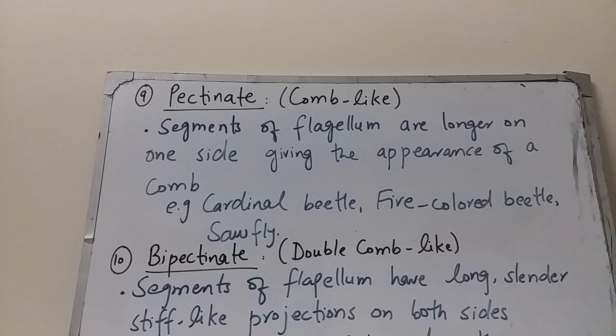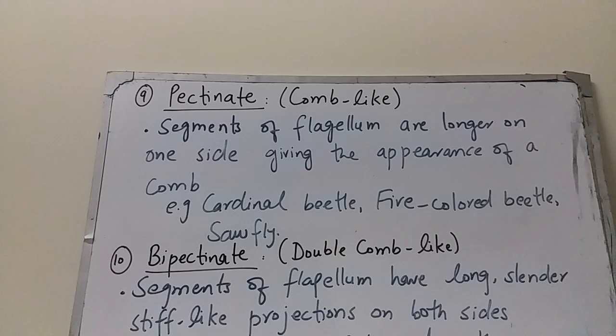The next type is pectinate antenna. Pectinate means comb-like. In pectinate antennae, the segments of the flagellum have long, slender, stiff-like projections on one side, giving the appearance of a comb. Pectinate antennae are found in cardinal beetles, fire-colored beetles, and sawflies.